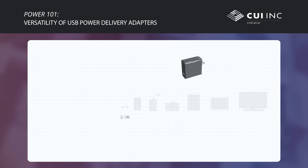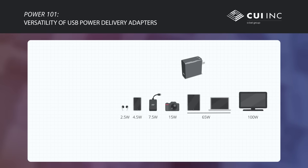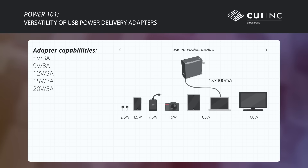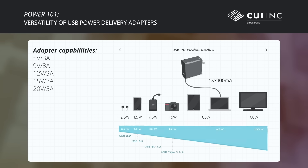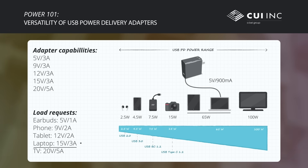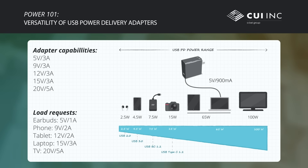The voltage and current level that a USB PD source provides is determined through a negotiation between the source and the load. The connection is initially made at 5V with a 900mA maximum current to allow interoperability with legacy devices. The source then advertises its voltage and current capabilities, and the load determines which configuration to use and requests it. If no communication occurs or communication is lost, the source will provide the initial 5V, 900mA supply.